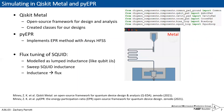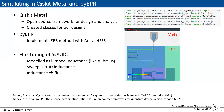In practice, we use Qiskit Metal where we've implemented our group's geometries as custom classes. This allows us to automate the design and layout and send it over to HFSS where we can find the eigenmode frequencies and use PyEPR to automate the extraction of our relevant parameters.